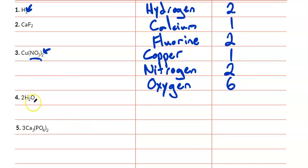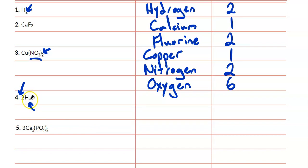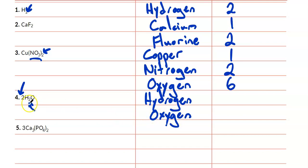In our next example, we've got hydrogen again, and just as before, we have this little two here — that two represents how many atoms of the element preceding it that we have. So what does this two mean? That two is a coefficient, and it tells you how many molecules you have — in this case, of water. So what we have to do is multiply the number of atoms by the number of molecules to figure out how many total atoms of each element we have. So for hydrogen, we have two atoms and two molecules of water, so that's two times two, which is four. And oxygen, we have one atom and two water molecules, so two times one is two.